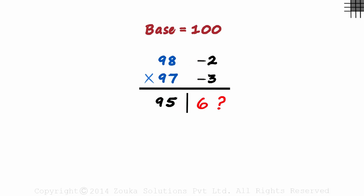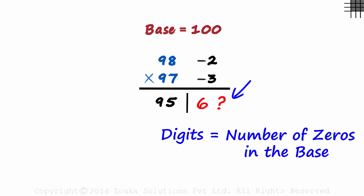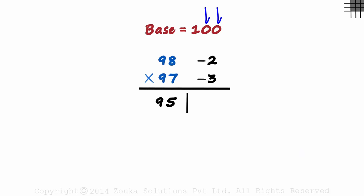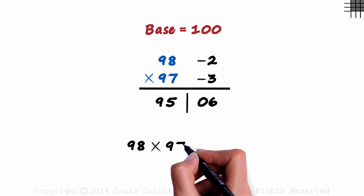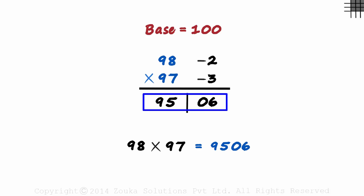So should we write a 6 here? Don't forget! The number of digits on the right will be equal to the number of zeros in the base. As there are two zeros in 100, there will be two digits here. 6 will be written as 06. There's your answer! 98 times 97 is 9506.